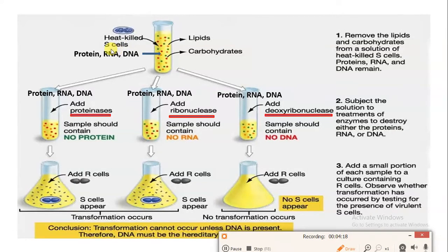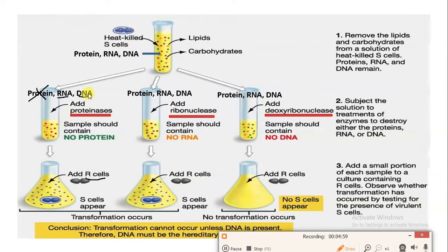When we heat-kill the S-strain of Streptococcus pneumoniae, we can see many fragments in the test tube: protein, RNA, DNA, lipid, and carbohydrate. Lipid and carbohydrate are removed, leaving only protein, RNA, and DNA. When proteinase is added, it breaks down the protein, so only RNA and DNA remain. When this is added to a conical flask already containing R-strain, the R-strain takes up the DNA and gets converted into the S-strain due to the transformation phenomenon.